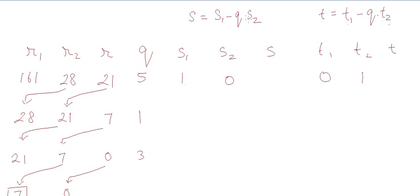S is calculated using the formula S1 minus Q times S2. T is calculated using the formula T1 minus Q times T2.